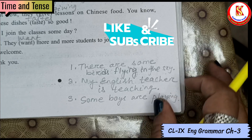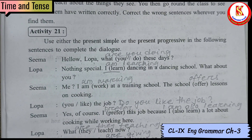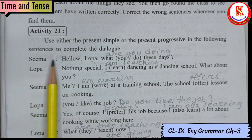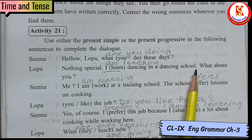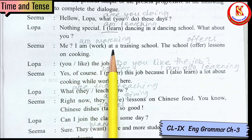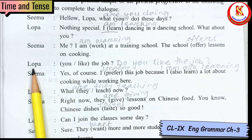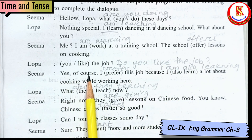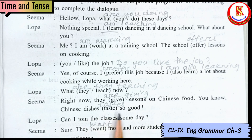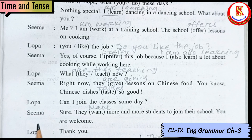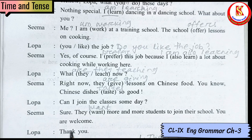Activity 21: Use either present simple or present progressive. Sima: 'Hello Lupa, what are you doing these days?' Lupa: 'Nothing special. I am learning dancing at a dancing school. What about you?' Sima: 'I am working at a training school. The school offers lessons on cooking.' Lupa: 'Do you like the job?' Sima: 'Yes, of course. I prefer this job because I am also learning a lot about cooking while working here.' Lupa: 'What are they teaching now?' Sima: 'Right now they are giving lessons on Chinese food.' Lupa: 'Chinese dishes taste so good. Can I join the classes someday?' Sima: 'Sure, they want more and more students to join their school. You are welcome.' Lupa: 'Thank you.'